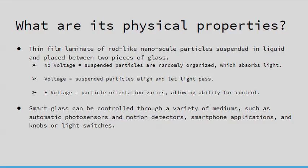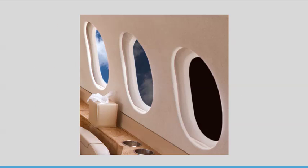It can be controlled through a variety of mediums, such as automatic photosensors and motion detectors, smartphone applications, and knobs or light switches. Here you can see the different varieties of transparency in blocking out light — in this case in an airplane, where you can control how much light comes into your specific area.